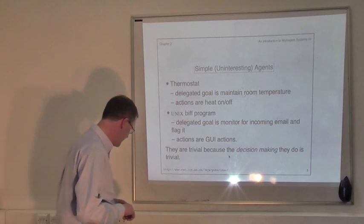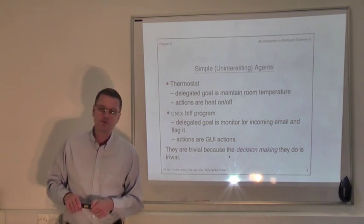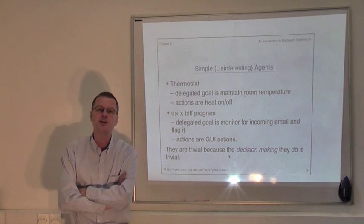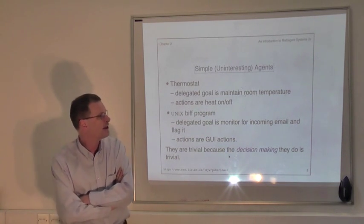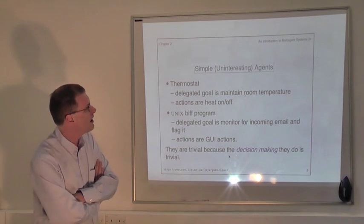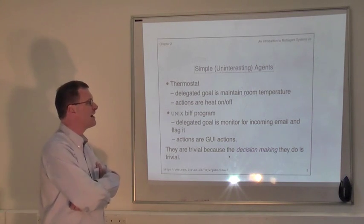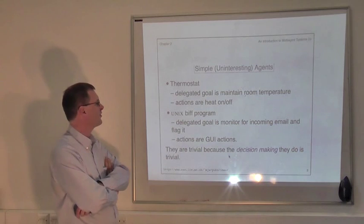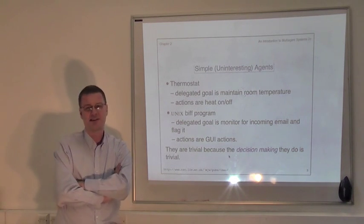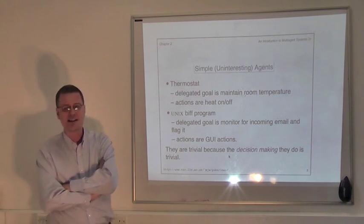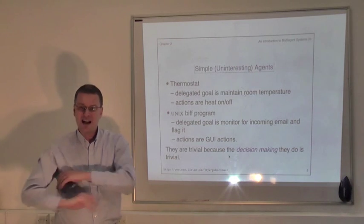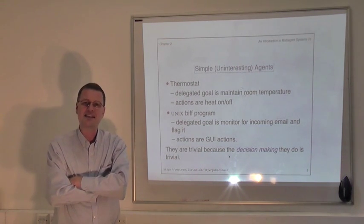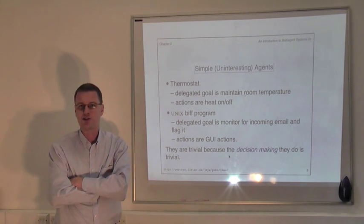We can identify systems with these capabilities that we don't usually call agents. Here are a few relatively uninteresting agents. A classic example is a thermostat. We can think of a thermostat as a very simple kind of agent. The delegated goal is to maintain room temperature within a certain range.